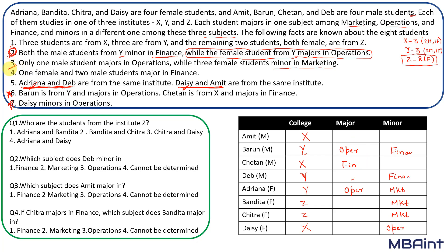What is Deb's major? He cannot major in operations — only one male does that, which is Barun. He cannot major in finance because he already minors in finance. So Deb's major is marketing. From clue four, one female and two male students major in finance. Chetan already majors in finance, so the remaining male student, Amit, also majors in finance.